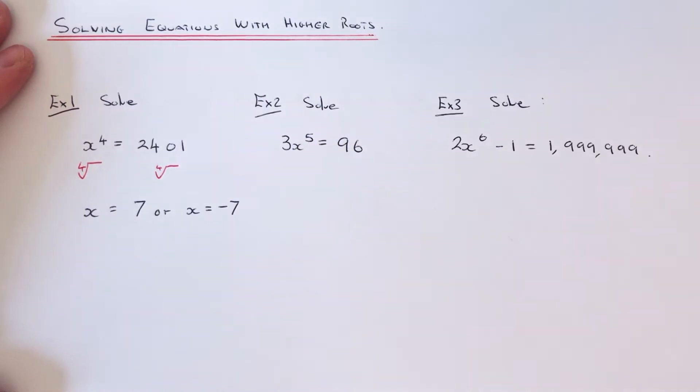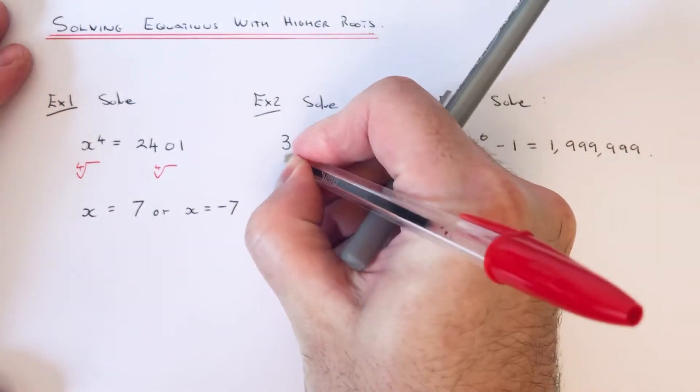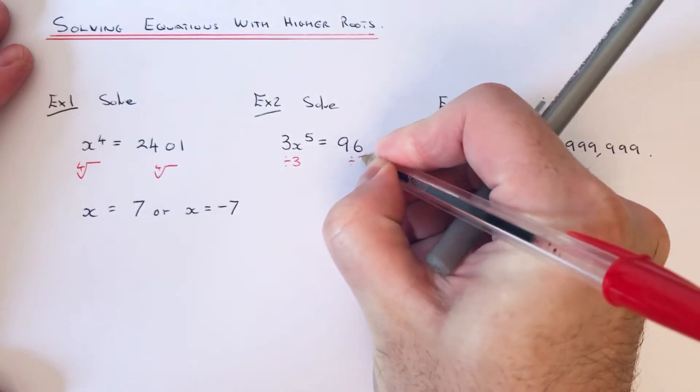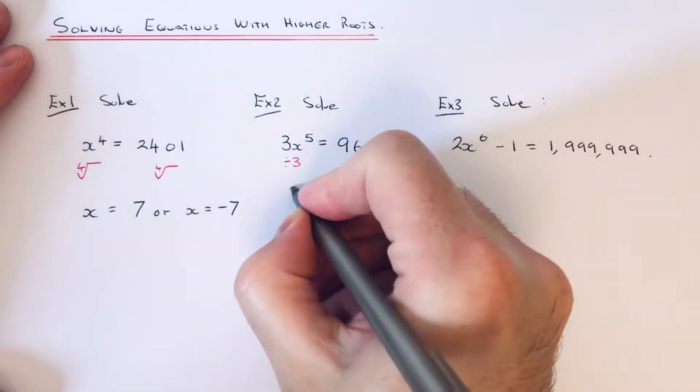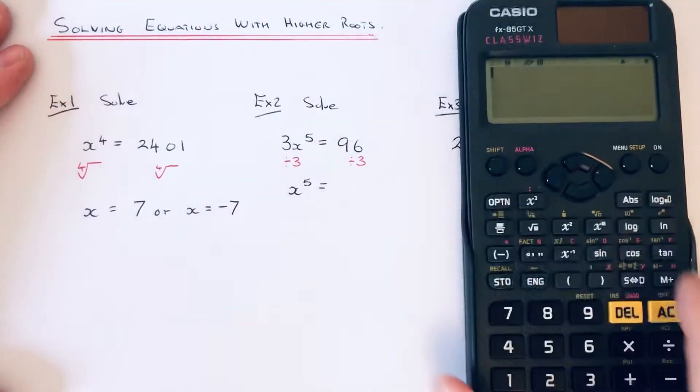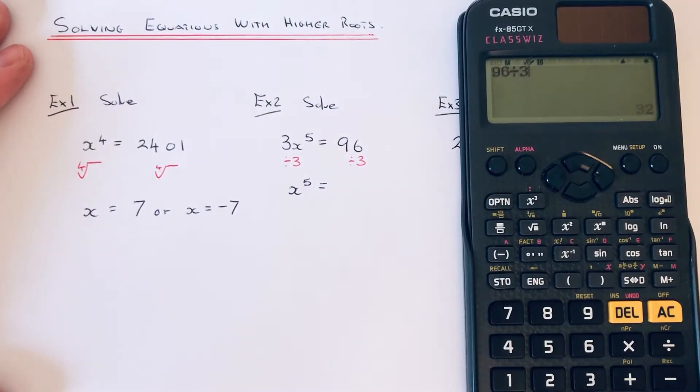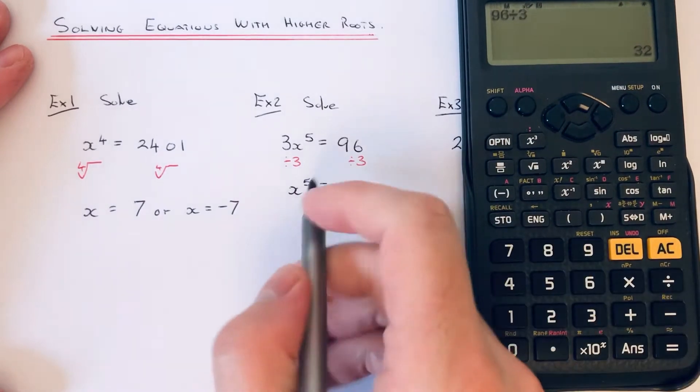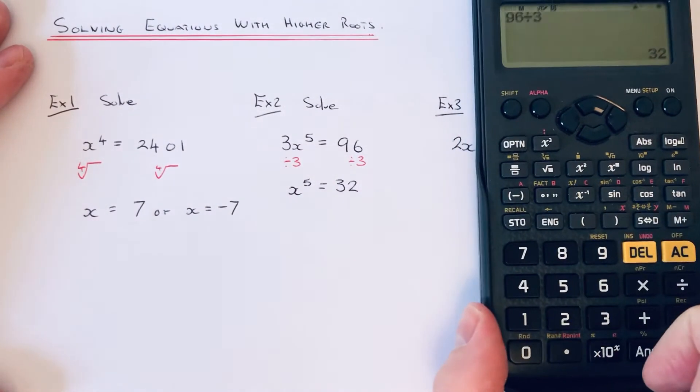That will give x to the power of 5, so 96 divided by 3 is 32. Then the opposite to power of 5 is to do the fifth root on both sides.